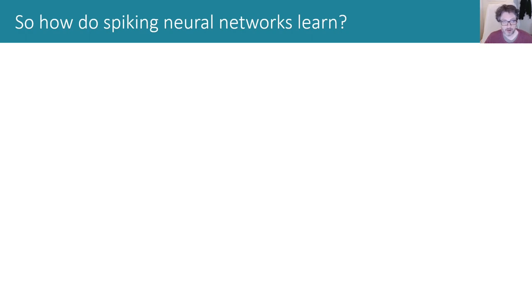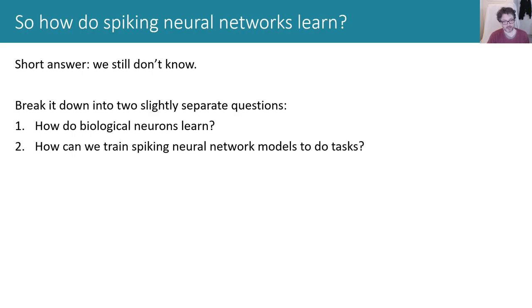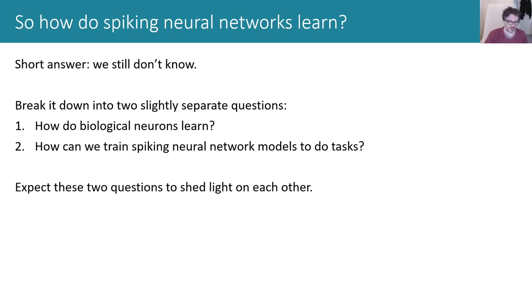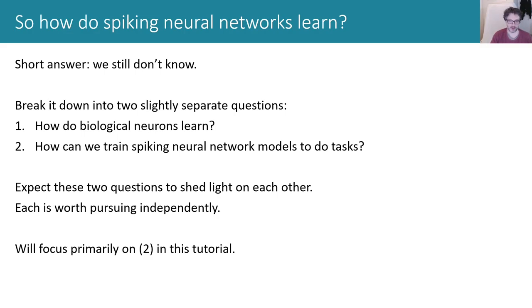The question is: how do spiking neural networks learn? The short answer is we still don't know. What we can do is break it down into two separate questions: how do biological neurons learn, and how can we train spiking neural network models to do interesting, difficult tasks? We'd expect these two questions to shed light on each other, and there's a big literature on both — one primarily from experimental data on biological neurons, and a more recent one on training SNNs using methods from machine learning.